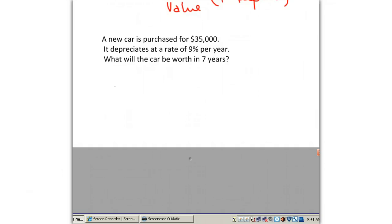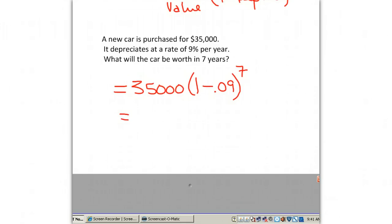So in 7 years, our car will be worth, we take the $35,000 it's worth when we buy it, we'll do 1 minus the depreciation rate of 9%, and we're going to raise that to 7 for the 7 years. So we're going to take $35,000 times 1 minus 0.09, which will give us 0.91 raised to the 7th power.